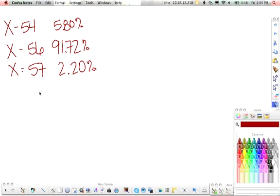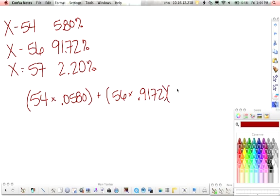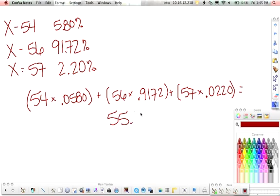So same thing we just did. Take 54 times 0.0580, add to that 56 times 0.9172, plus 57 times 0.0220. Plug this into your calculator. You end up with 55.7 basically.